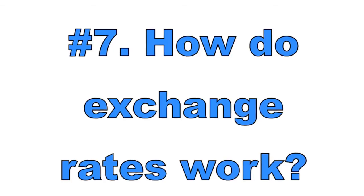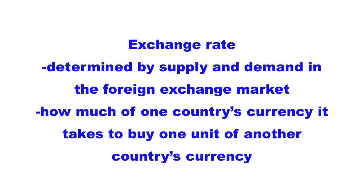Number seven: how do exchange rates work? An exchange rate is determined by supply and demand in the foreign exchange market — it is how much of one country's currency it takes to buy one unit of another country's currency. For example, it might cost 0.73 euros to buy one US dollar this month. If it costs 0.50 euros next month, the euro has appreciated because it takes fewer euros to buy one dollar, meaning the dollar has depreciated against the euro. With those rates, $1.37 US buys one euro this month; next month it costs $2.00 to buy one euro. Exchange rates and currency value are all relative.